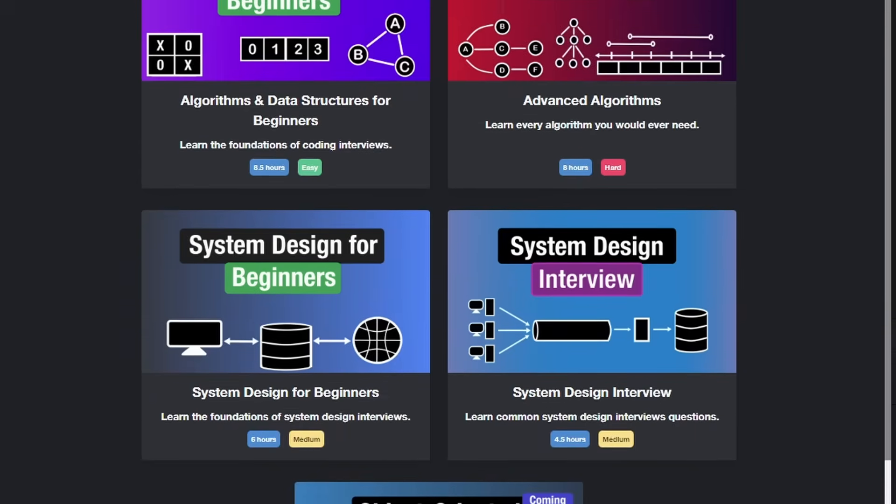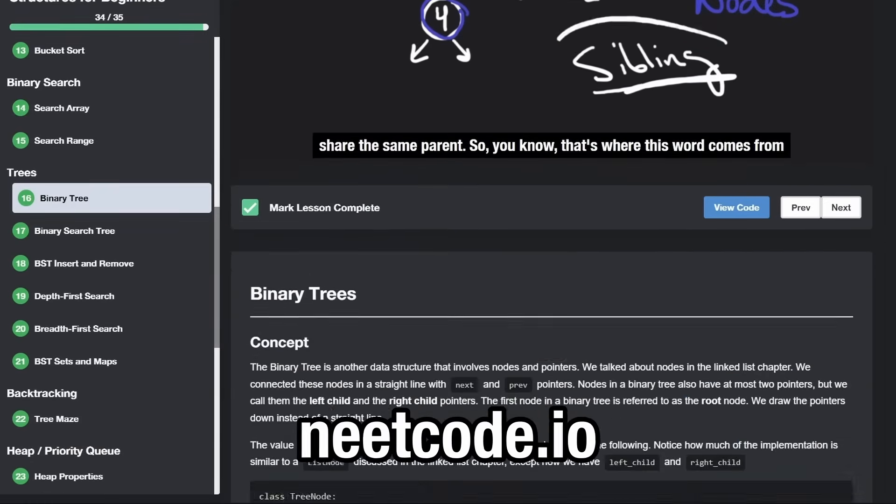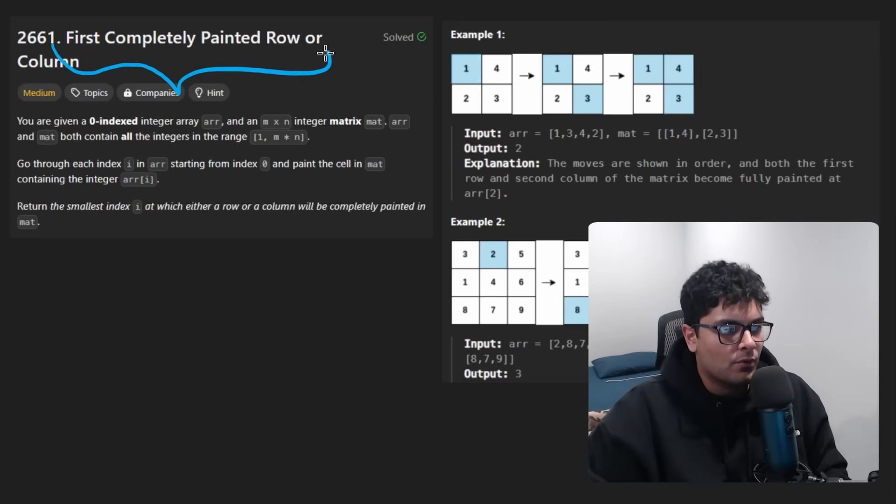Hey everyone, welcome back and let's write some more neat code today. So today I'll solve a problem: First, completely painted row or column.